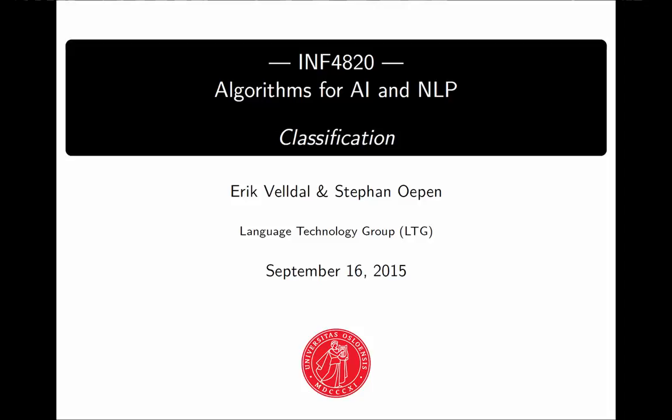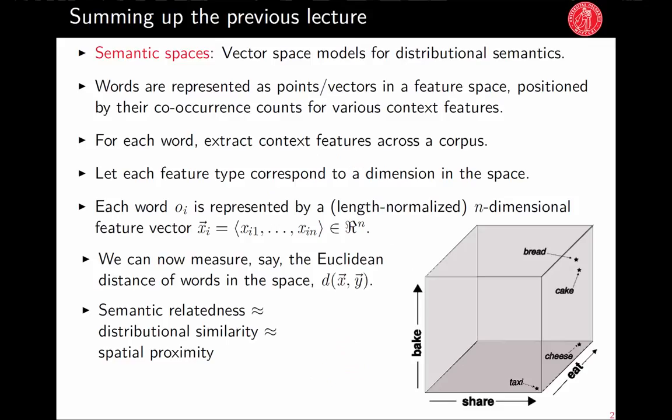The main topic for today is classification. We're still going to be working with vector space models from the last lecture, but today we'll take one more step and move from representing individual data objects in a vector space model to representing classes and performing classification. First, I'll spend a couple of slides briefly recapping what we talked about in the previous lecture, just to make sure we're all on the same page.